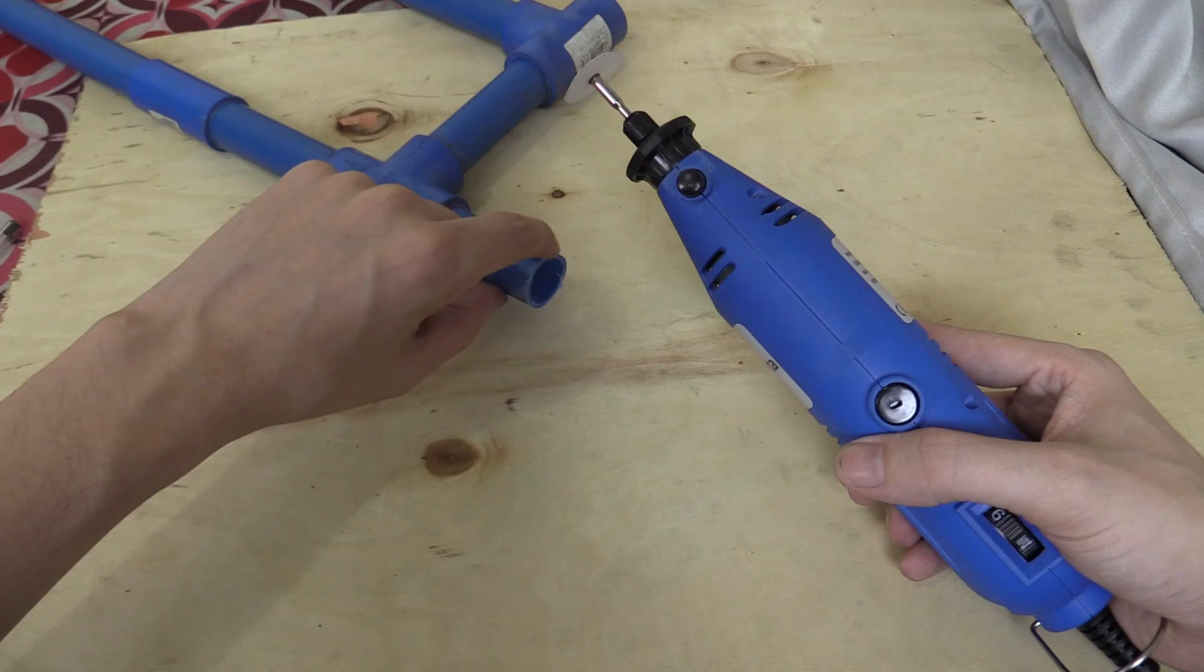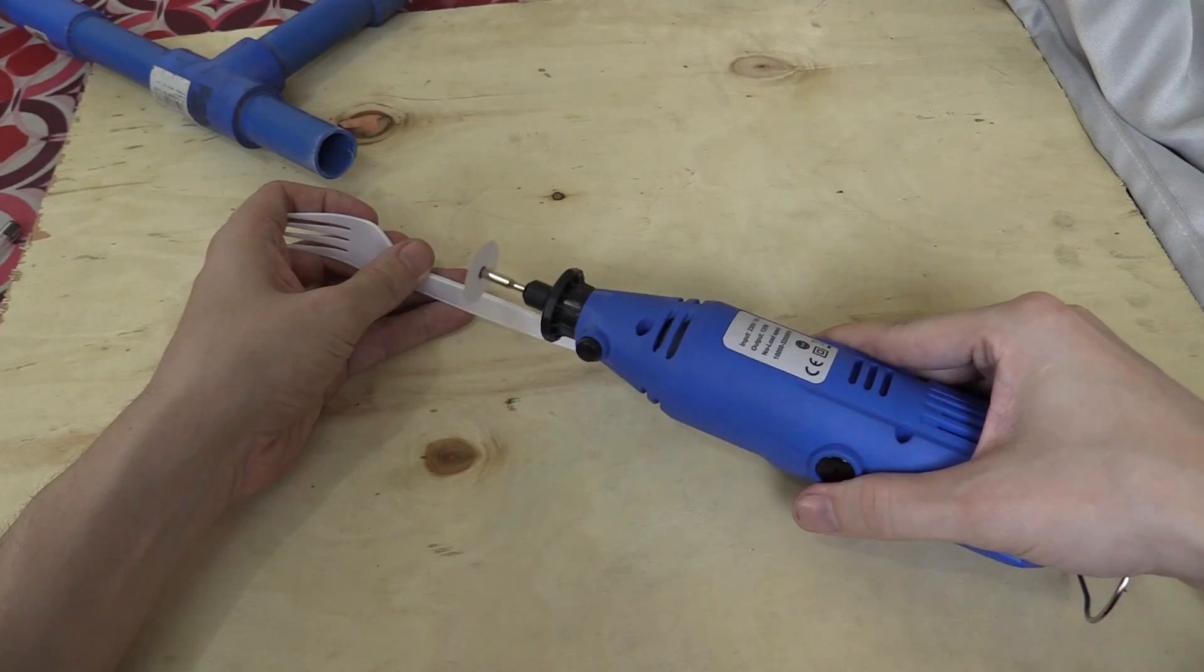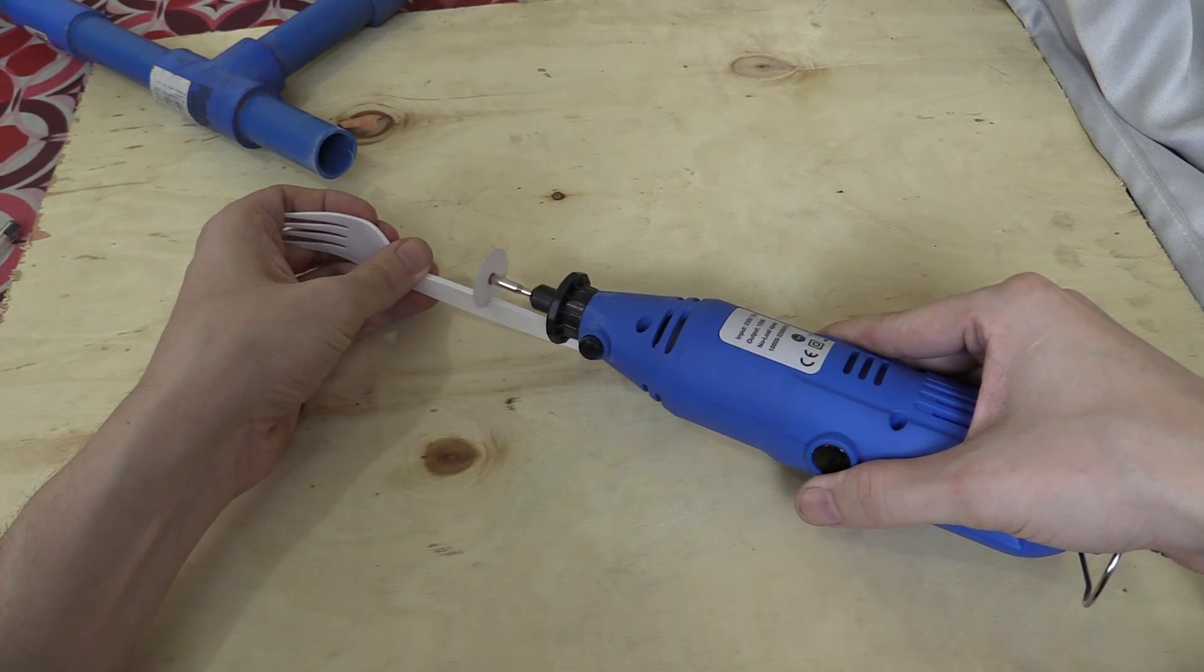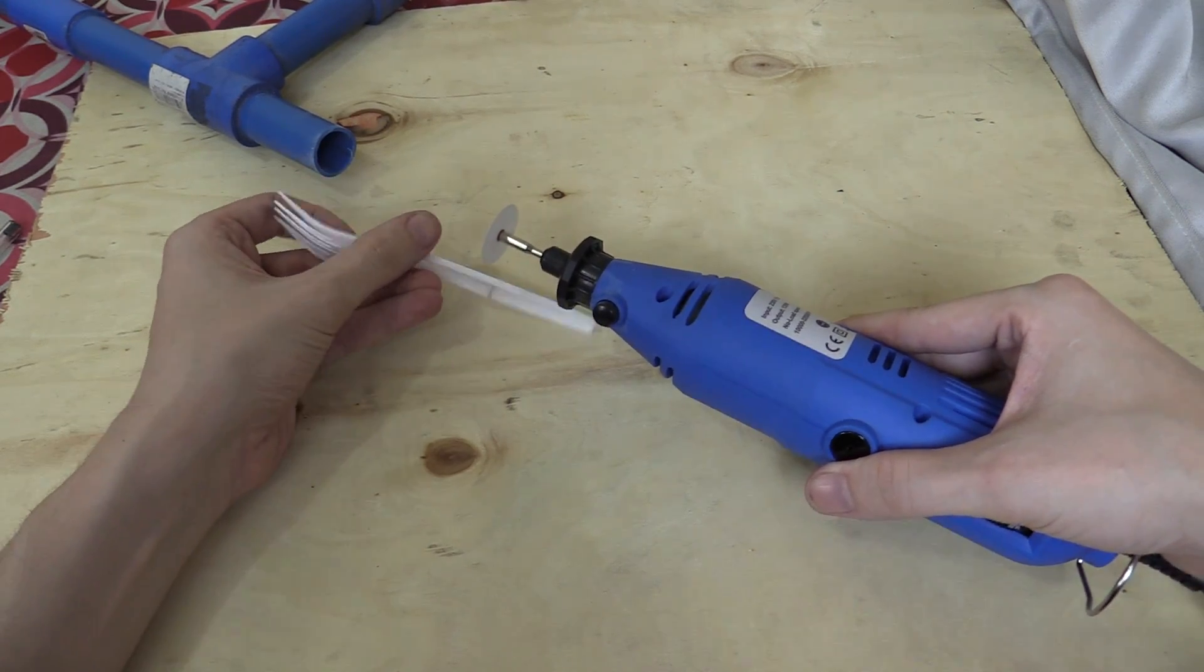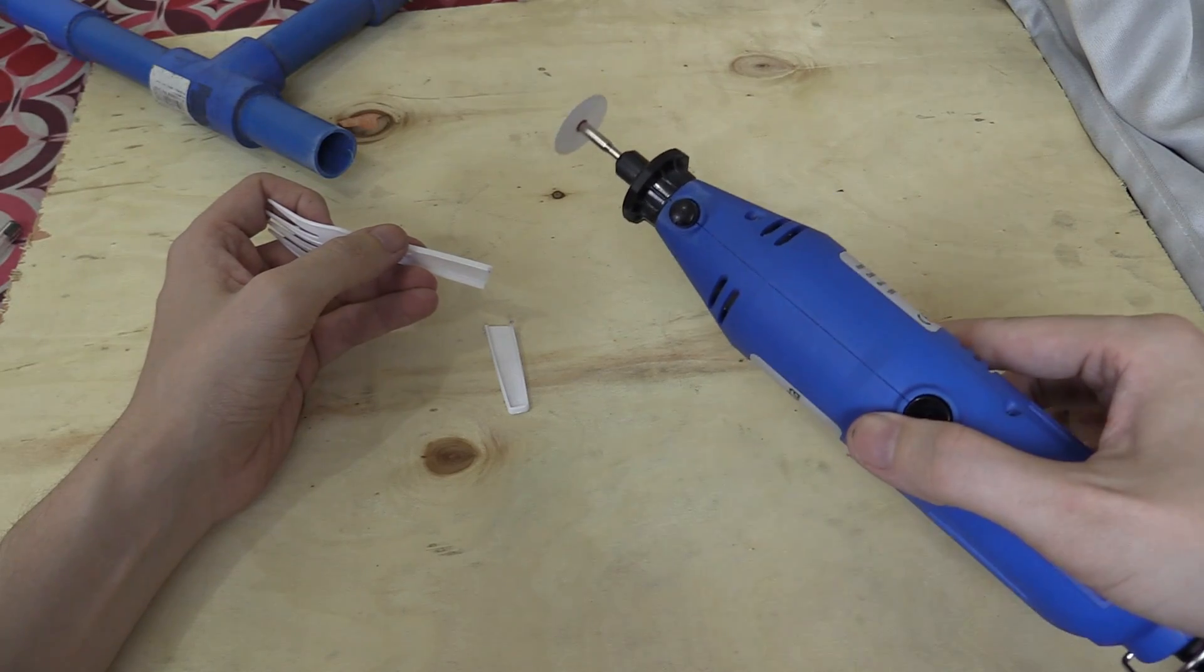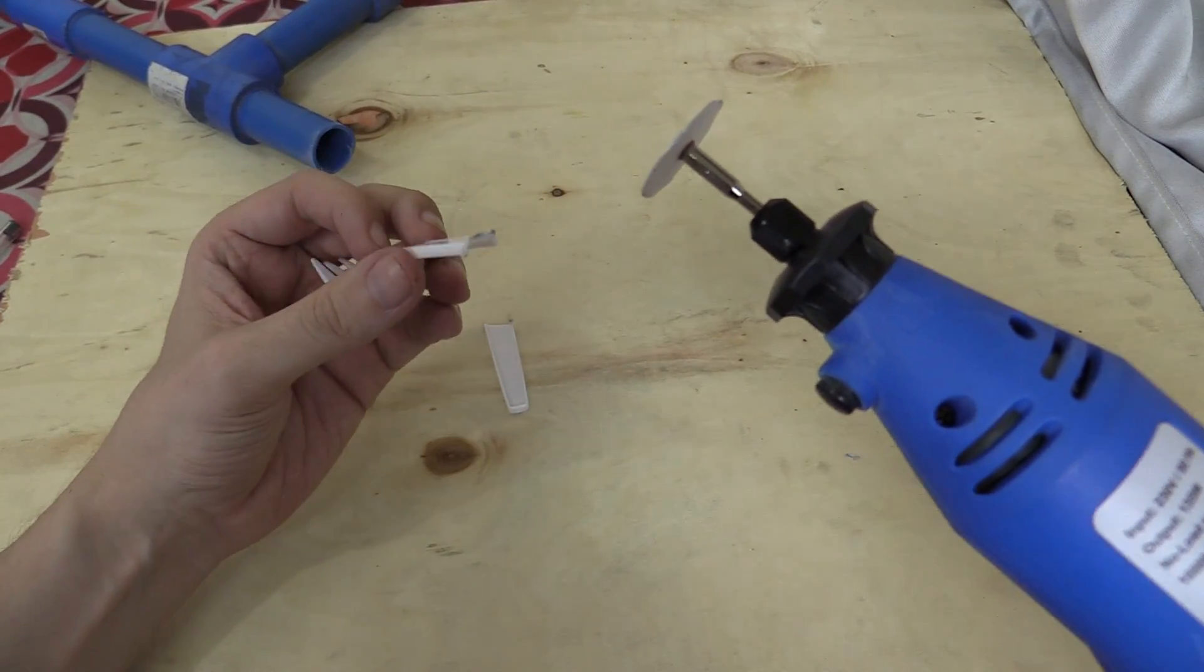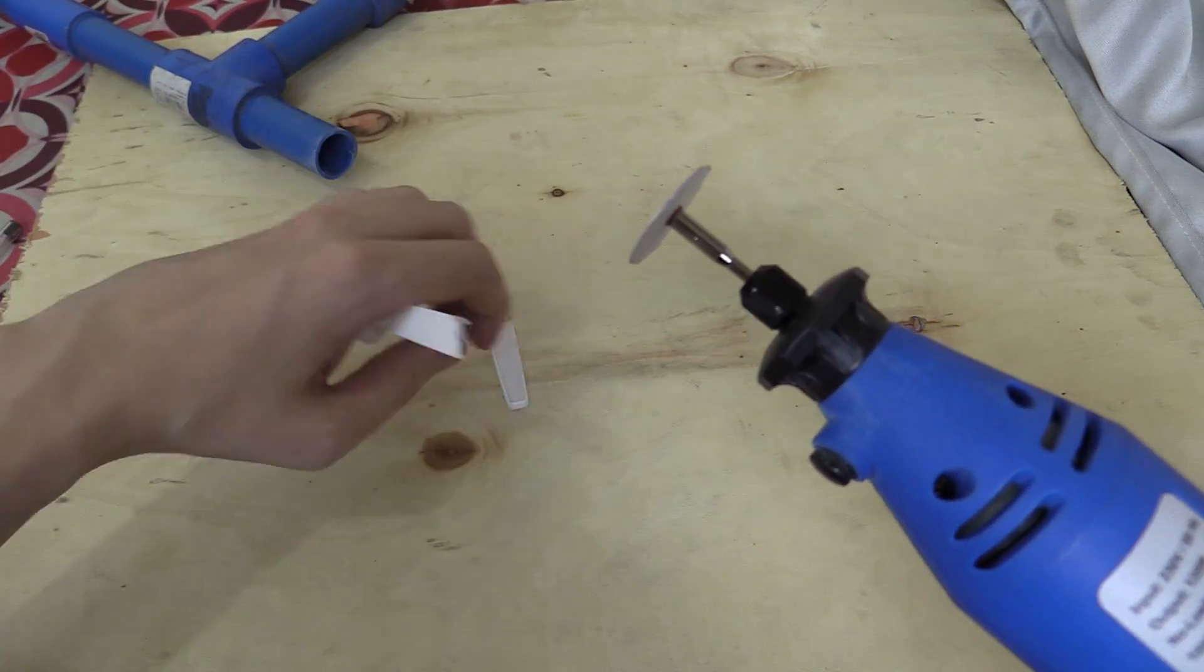But instead of beginning with this PVC tubing let's start with something easier, this plastic fork. So you can see it cut through that pretty easily, no problem at all. I'm actually quite impressed with that. Yeah they cut through quite easily.